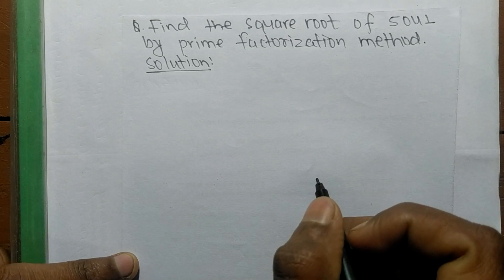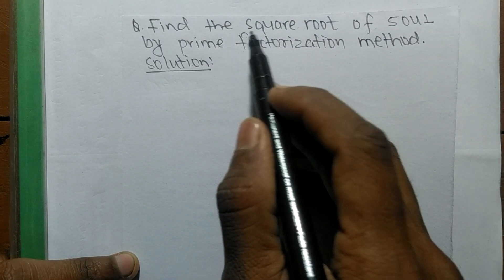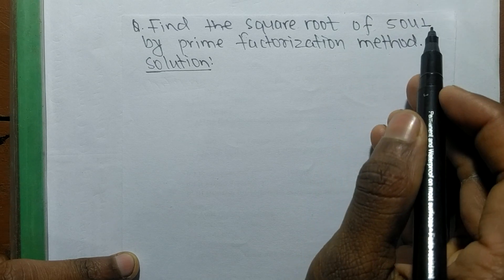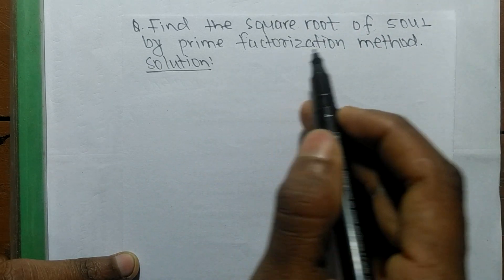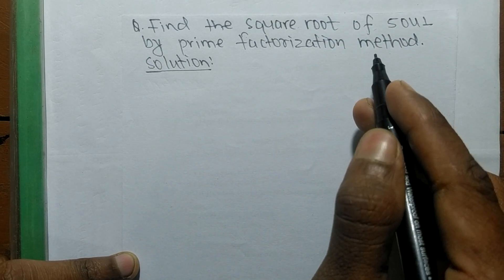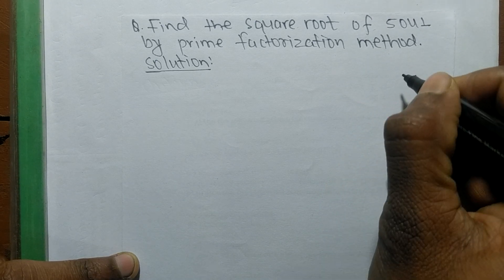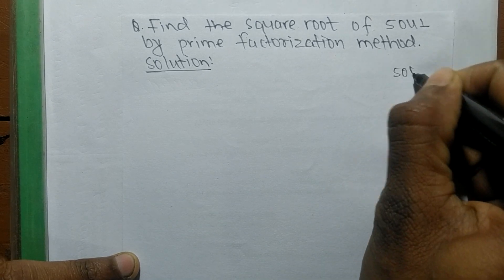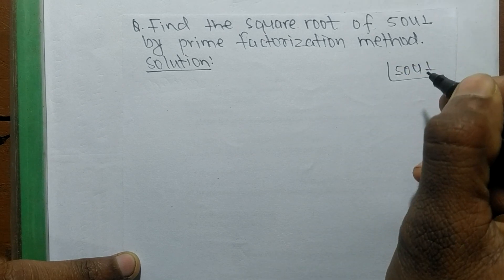Today in this video we shall learn to find the square root of 5041 by prime factorization method. To find the square root, first we have to find the prime factors of 5041.